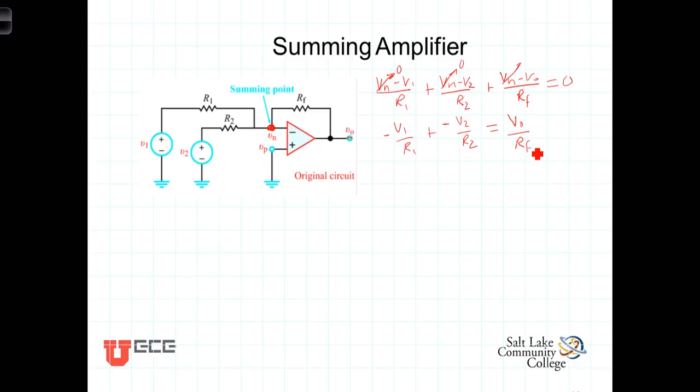Now if we multiply both sides of the equation by R sub f and factor out this minus sign there, we're going to have then that V out is equal to negative R sub f over R1 times V1 plus R sub f over R2 times V2. That's supposed to be a plus sign there.